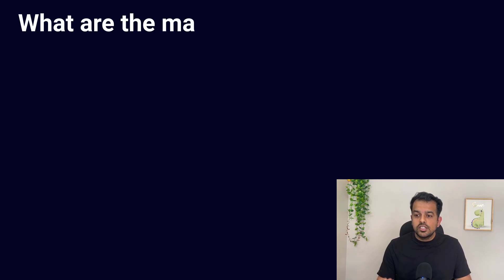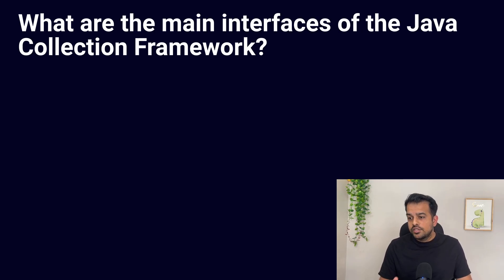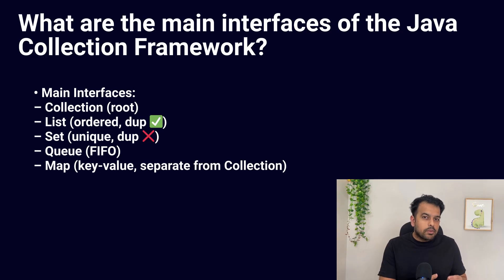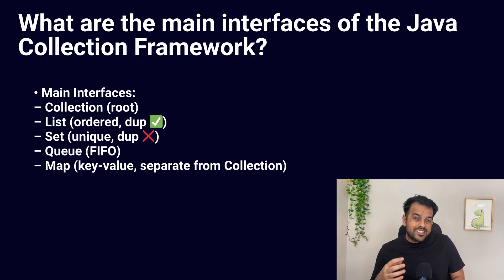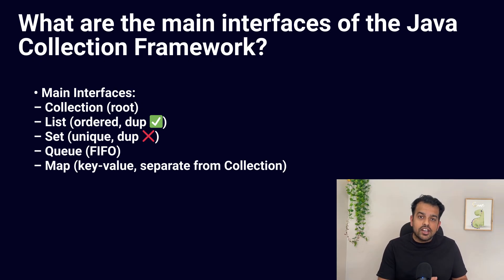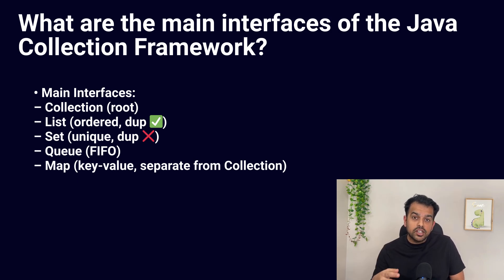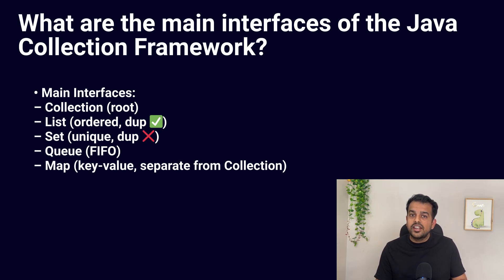The next question is: what are the main interfaces of the Java Collection Framework? The main interfaces are Collection, List, Set, Queue, and Map — each one helps manage data in a different way. Many candidates give a half answer here and lose marks. Collection is the root interface for most collection types, and from Collection we get List, Set, and Queue.